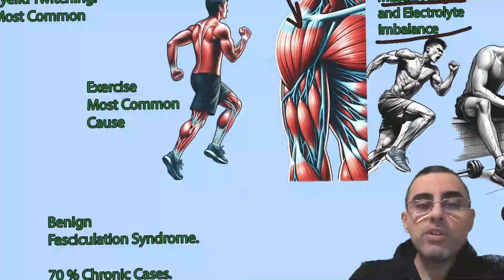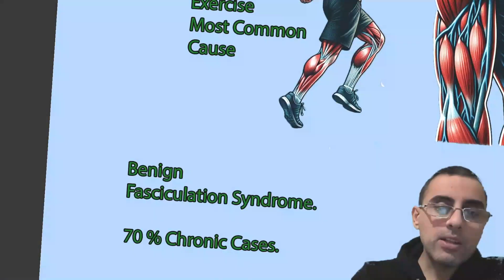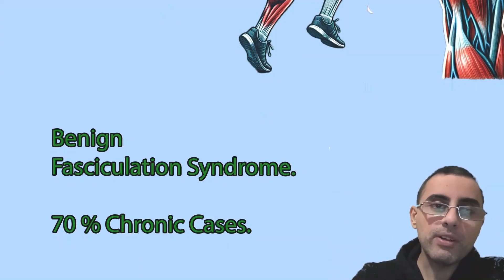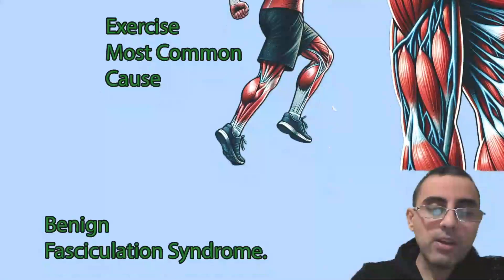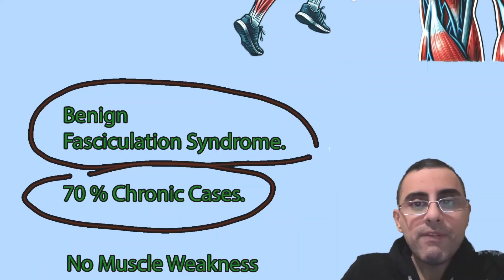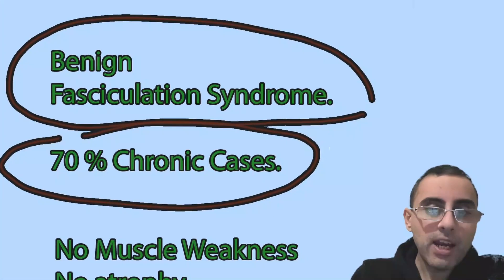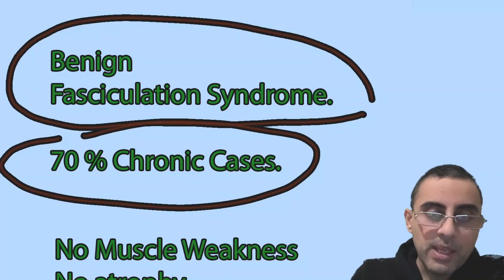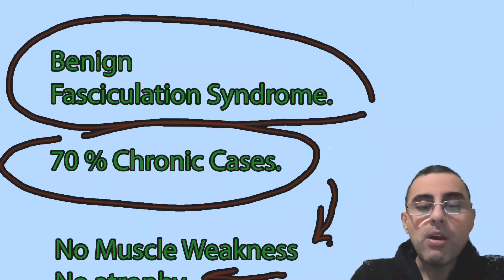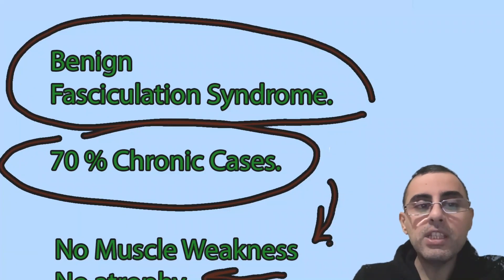In most common cases, fasciculations are very benign with no serious problem behind them. Sometimes, however, fasciculations are chronic. Chronic fasciculations are less common, but in about 70% of chronic cases, the cause is benign fasciculation syndrome. This is when fasciculations occur regularly in muscles but there are no other important symptoms — no muscle weakness, no muscle atrophy — and electromyography is normal.